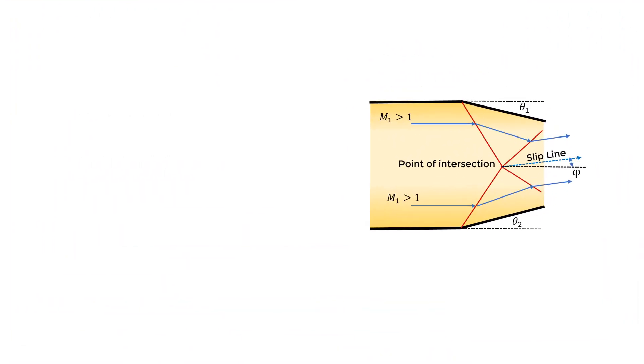The direction of the flow and the pressure must be the same above and below the slip line. Hence, one can guess the flow direction, then estimate the deflections of the flow and, using the oblique shock relations, calculate the pressure around the slip line.